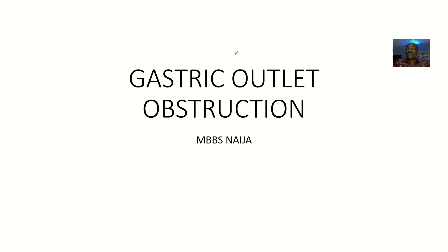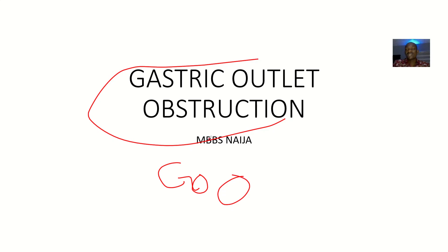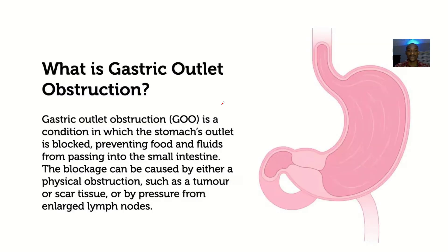The next surgical problem we'll be talking about is gastric outlet obstruction, abbreviated as GOO. Anytime you see GOO, it simply means gastric outlet obstruction. Gastric refers to the stomach.